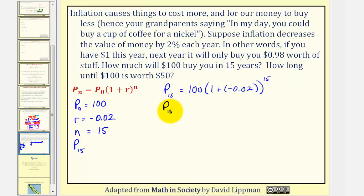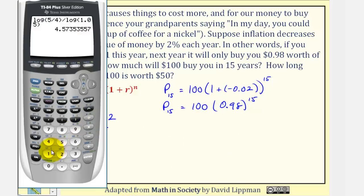So we have P₁₅ = 100. Notice how the base here is going to be 1 plus negative 0.02, or 0.98, raised to the power of 15. And now we'll go to the calculator. So we have 100 times our base of 0.98, raised to the power of 15. So $100 would be worth approximately $73.86 in 15 years.